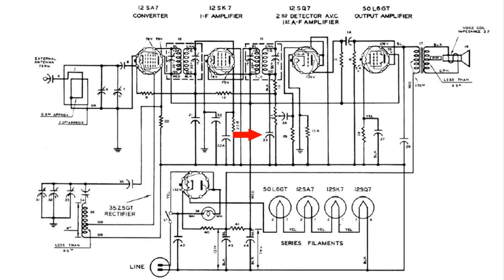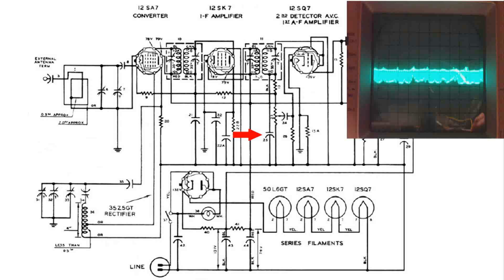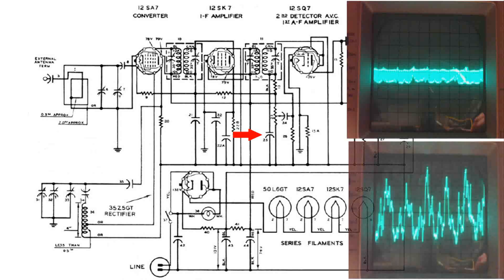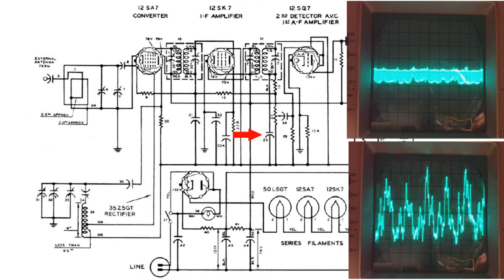From this demonstration, you can really see how very important that little RF bypass capacitor is to the proper operation of this AA5 radio.